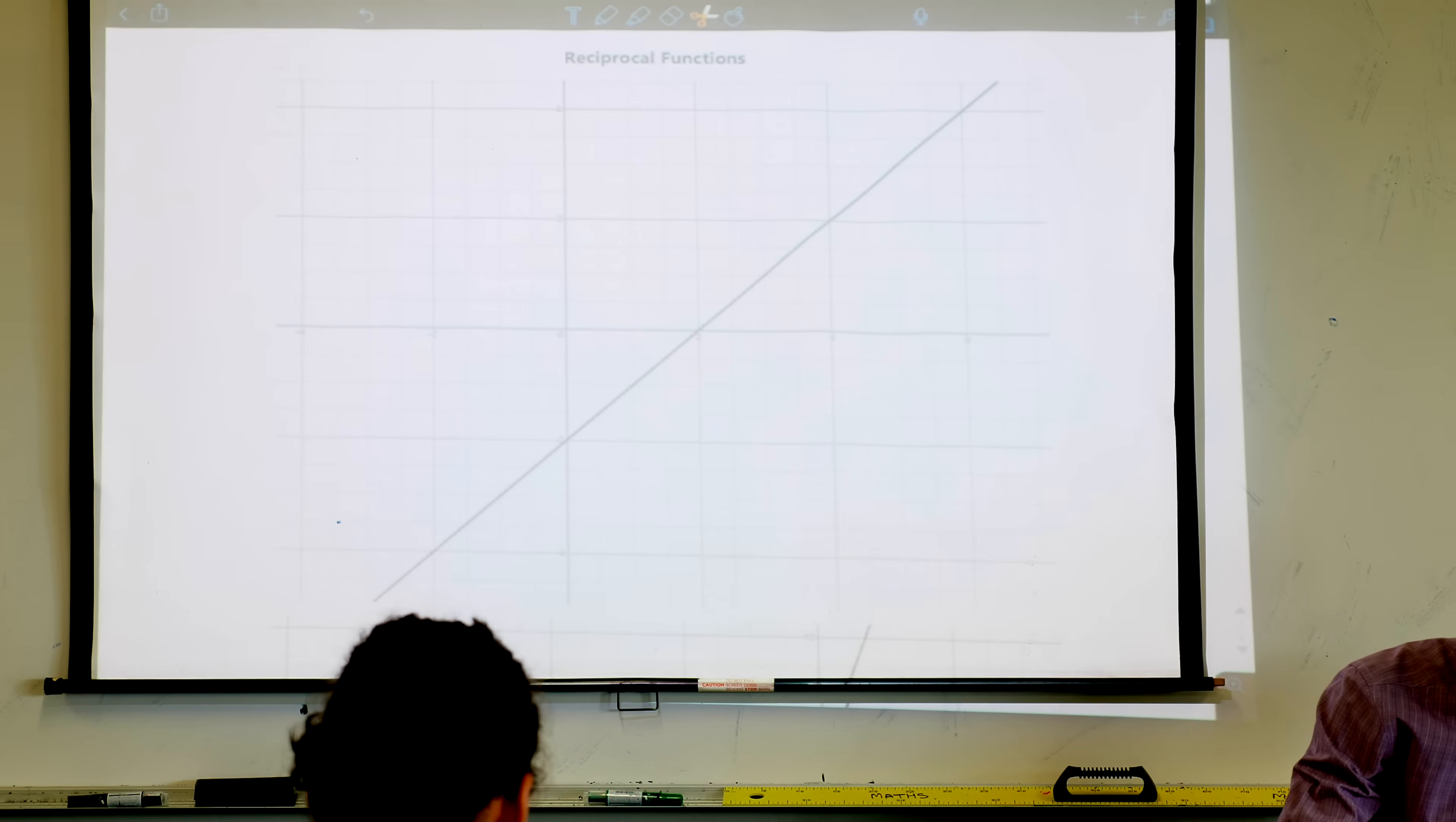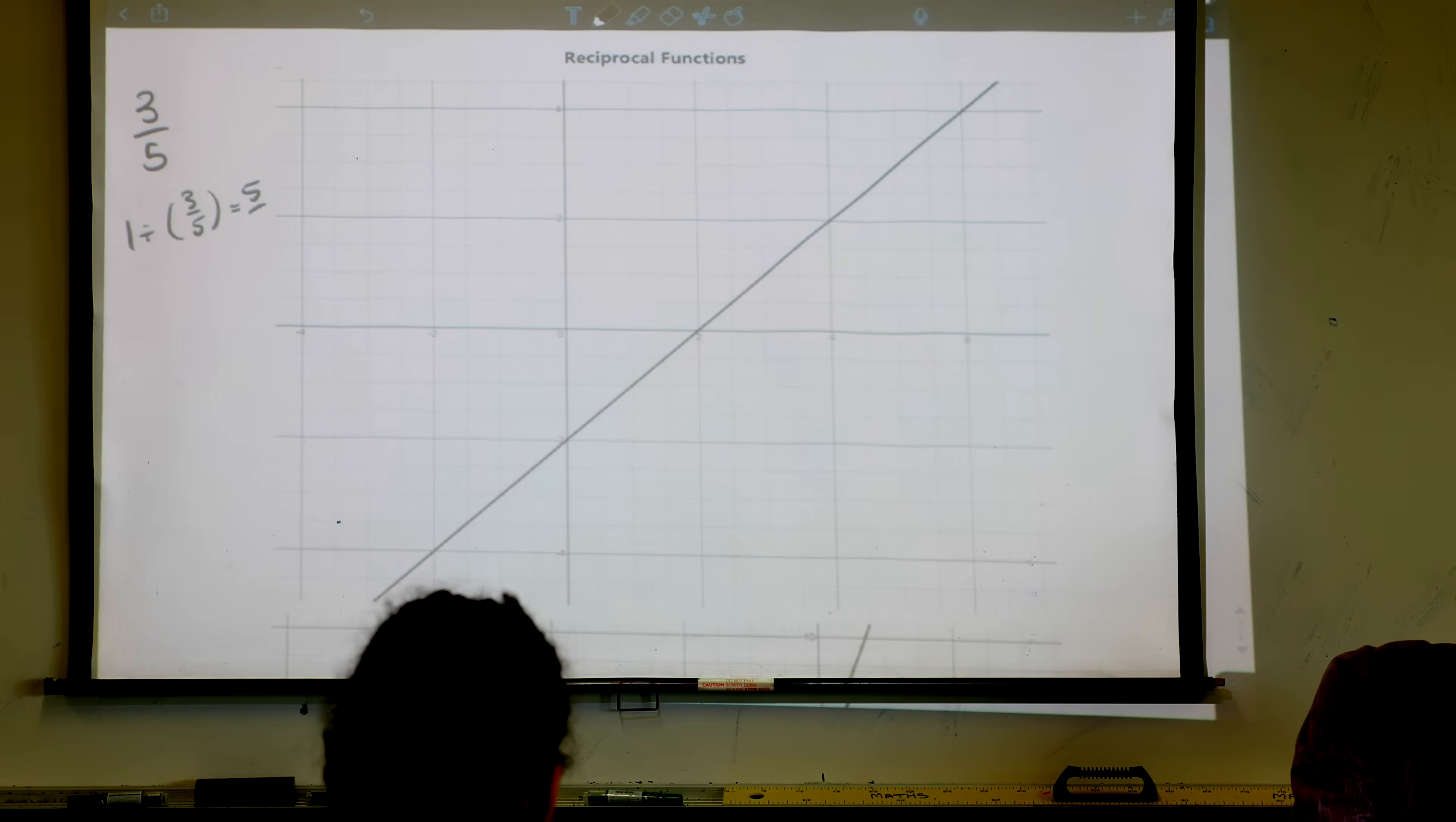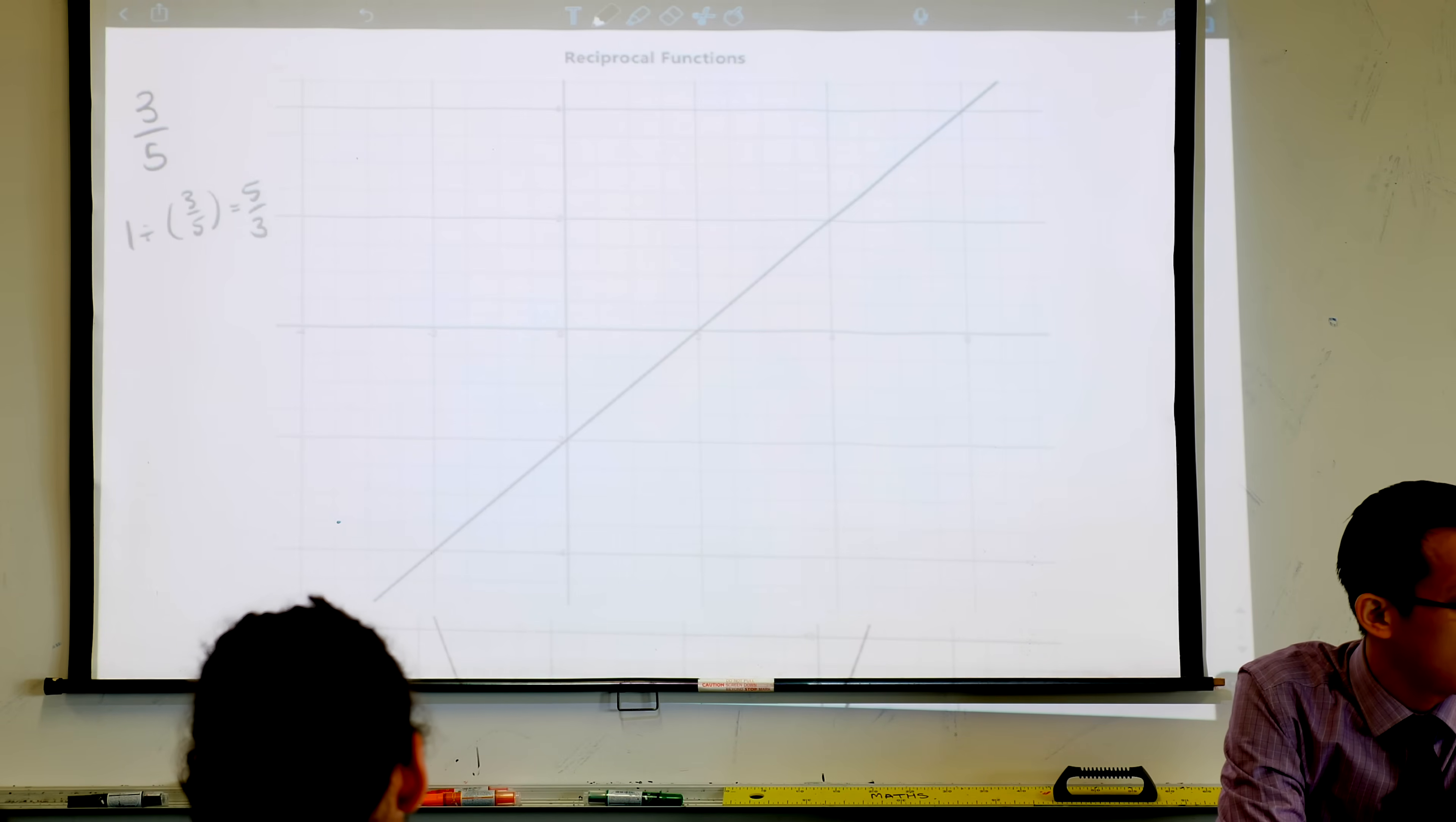So you know that taking the reciprocal of something is just looking at that thing and then saying what's 1 divided by that thing. 1 divided by 3 fifths is, like you told me, 5 thirds. And that's all we're thinking about but with functions, not with fractions. There's a whole bunch of different numbers, not just individual numbers like 3 fifths.